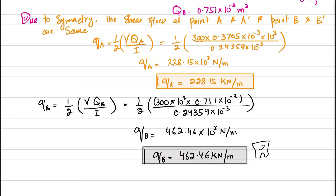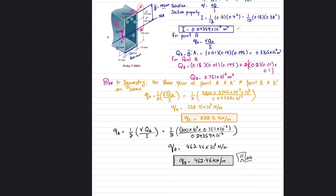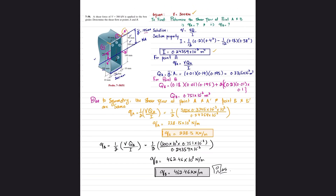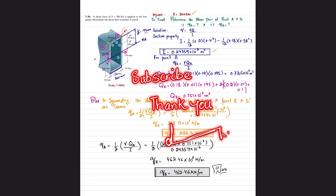These are the answers to Problem 7-50: q_A = 228.15 kN/m and q_B = 462.46 kN/m. I hope you enjoyed this video and learned from it. If you're new to my channel, please subscribe and press the bell icon for notifications. If you have any questions, ask in the comment section. Thank you for watching.